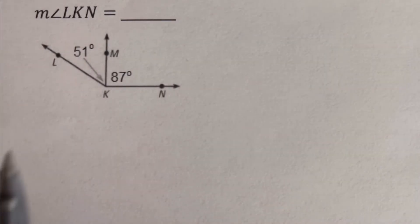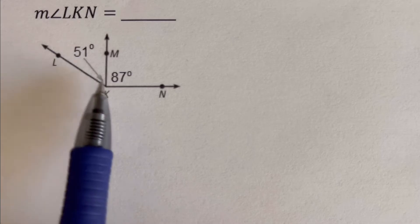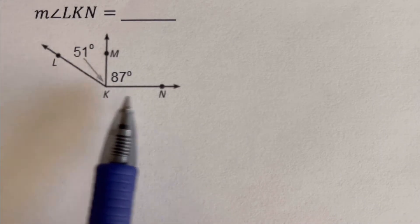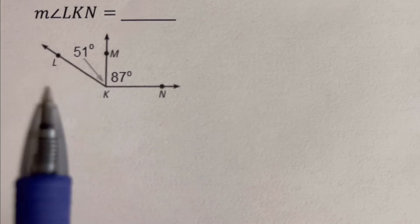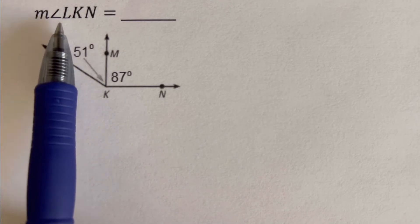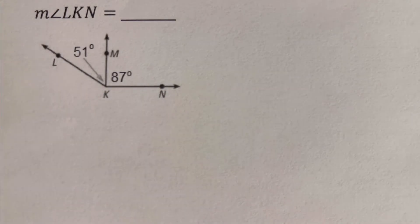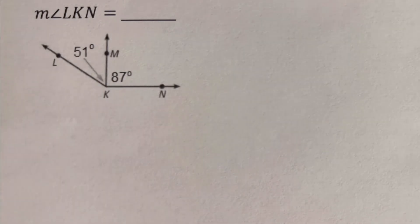Looking at this first example, we have two angles: LKM and MKN. We're supposed to determine the measure of angle LKN. We're going to use the angle addition postulate, which says we add the first and second angles and that equals the whole thing.